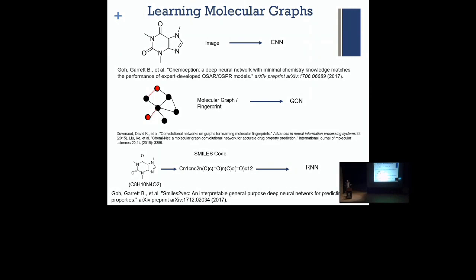How can we learn about molecular graphs? The first approach is to learn the image itself, though this can be problematic — you're going from a 3D system to a 2D system and may lose details. You can use a CNN, a convolutional neural network, but it can learn just specifics of the image rather than the generalization of the structure. Another way is learning the graph itself and passing it through a graph convolutional network. A third way is transforming the molecular graph to a SMILES linear code and then putting it into a recurrent neural network.